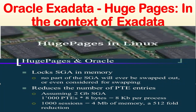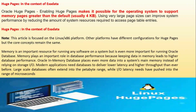In this video we are going to see huge pages in the context of Exadata. We already know huge pages in Linux and how it is related to Oracle database. Huge pages under Oracle locks the SGA in memory — no part of the SGA will be swapped out or considered for swapping, reducing the number of PTE entries. Assuming a 2GB SGA, 1000 PTEs at 8 bytes equals 8KB per process, so 1000 sessions equals 4MB of memory — a 512-fold reduction.